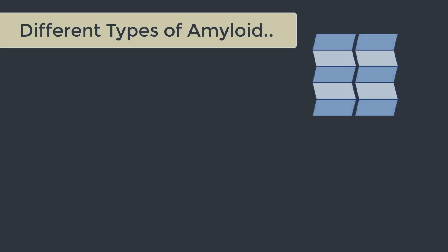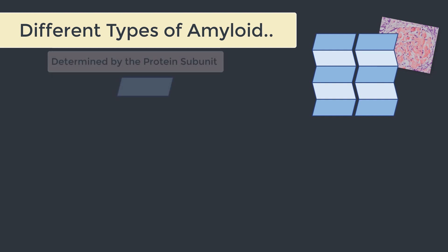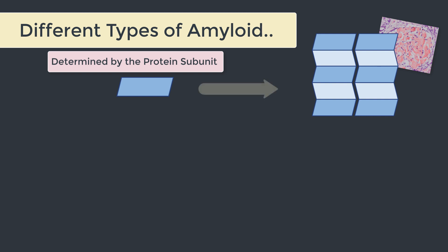Whilst all amyloid fibrils look the same under the microscope, the type of amyloid is determined by the protein subunit that led to that amyloid in the first place. Apparently there are more than 30 proteins in humans that have been associated with the formation of amyloid. Many of these are localized forms specific to various tissues, but the ones to memorize today are the proteins which lead to systemic amyloidosis — these are the ones that tend to show up in your MCQs. So let's lock this in.